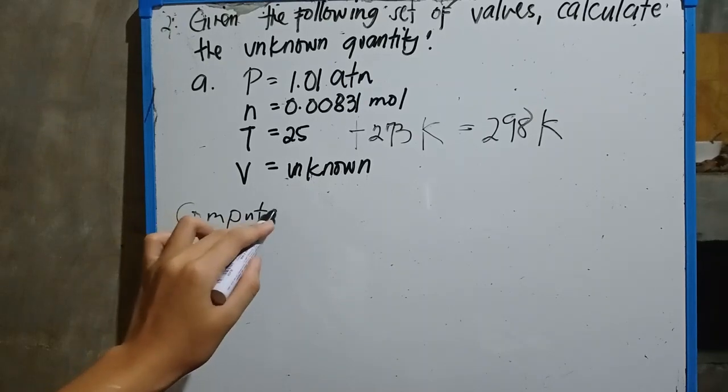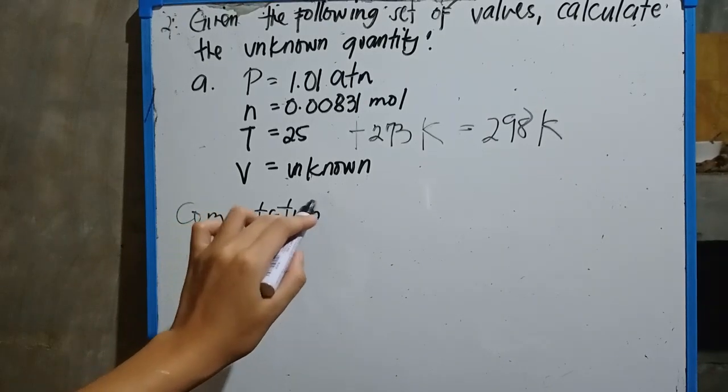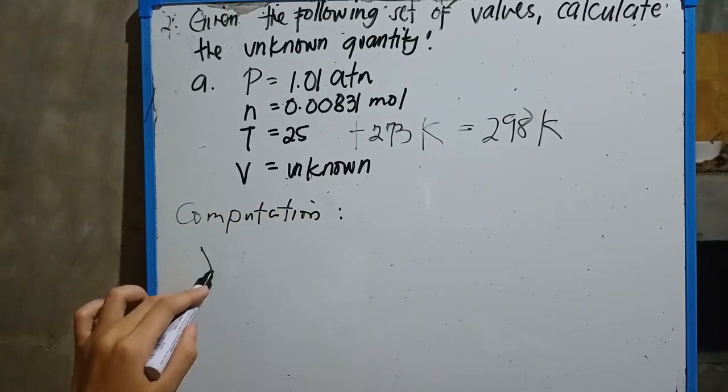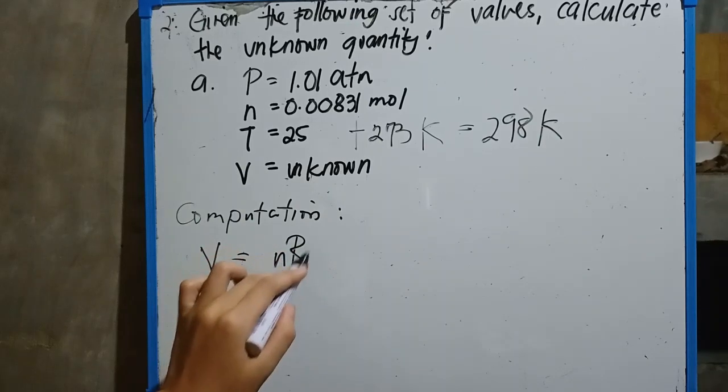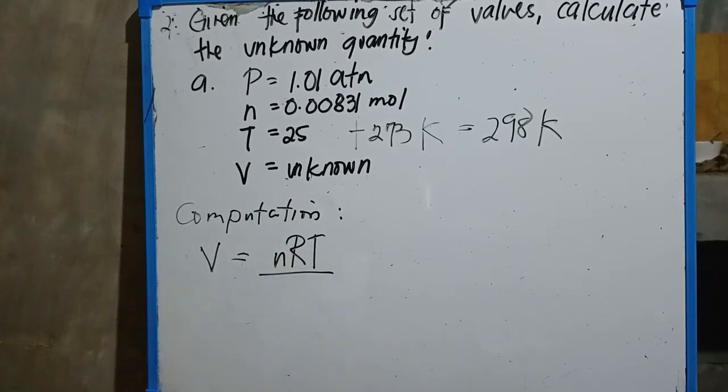So we have now our temperature in kelvin. We can now solve how to get the volume for this type of ideal gas. So volume is equivalent to nRT over P. That's what we'll use if you're going to solve for the volume.